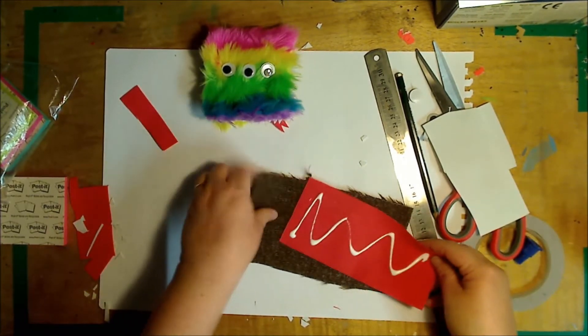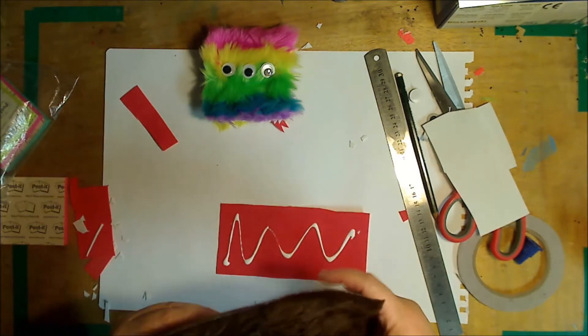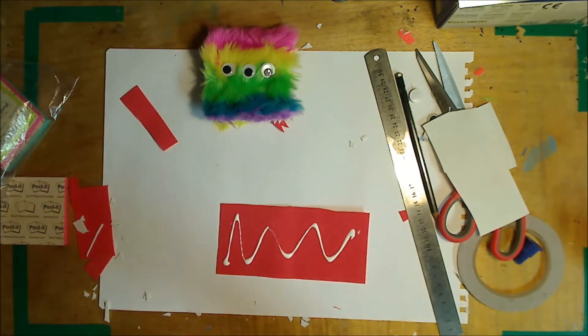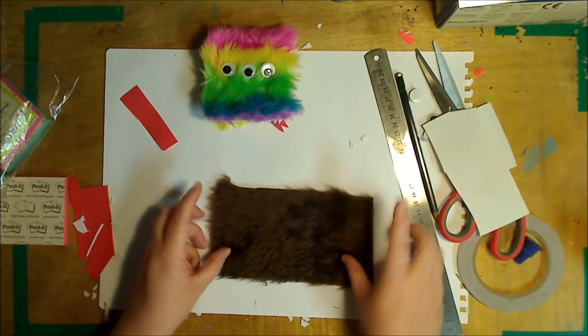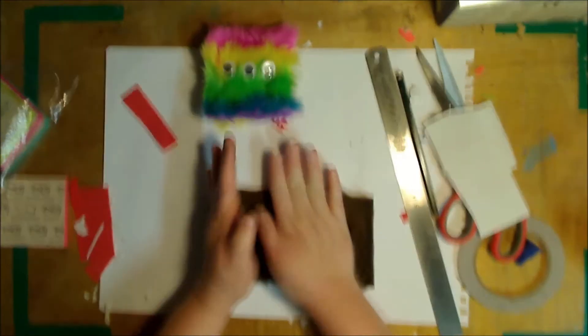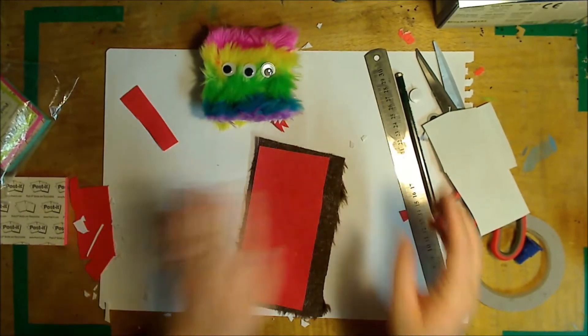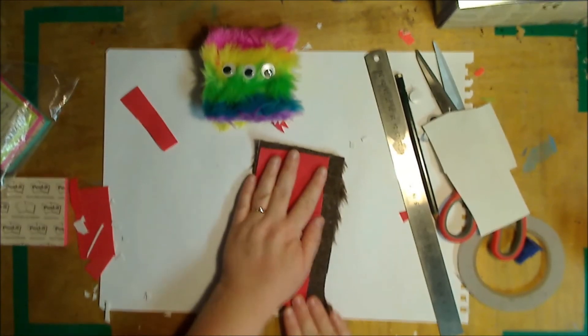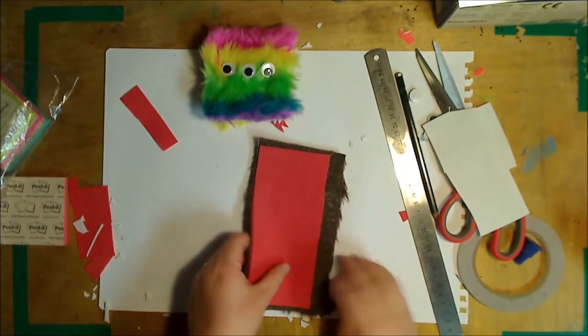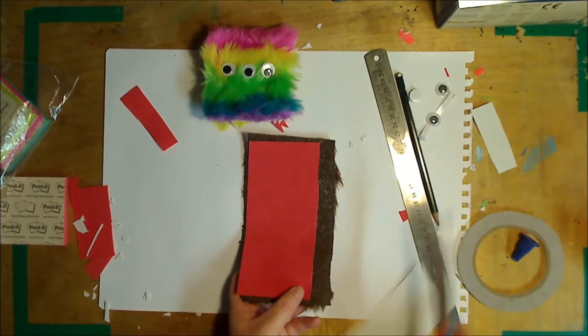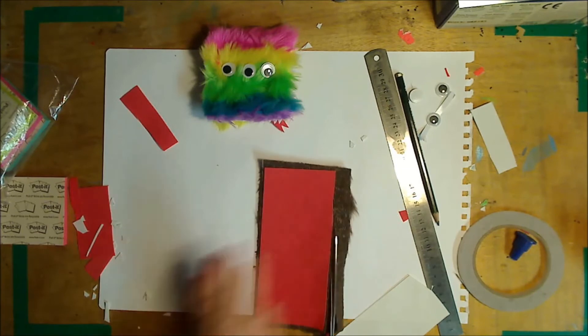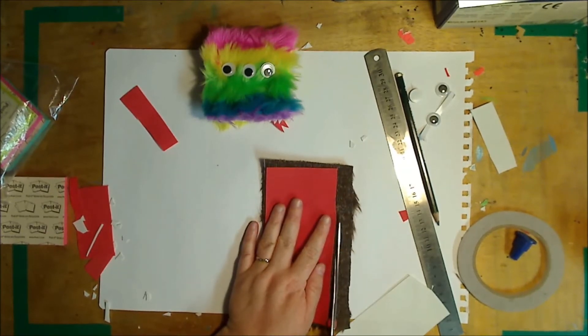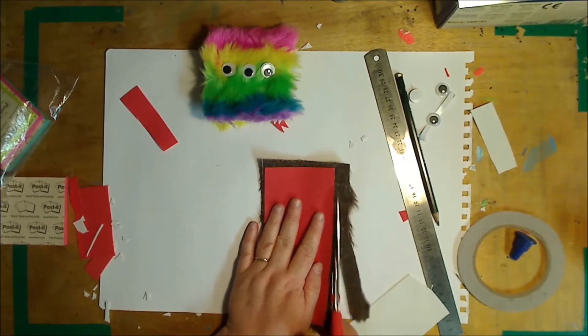Now I didn't cut the brown fur exactly to size so I can show you. You want a little bit of overlap on the side but obviously not that much. So we're just going to trim it up based on the size of the square, leaving about a millimeter over the edge to give it that furry monster look.